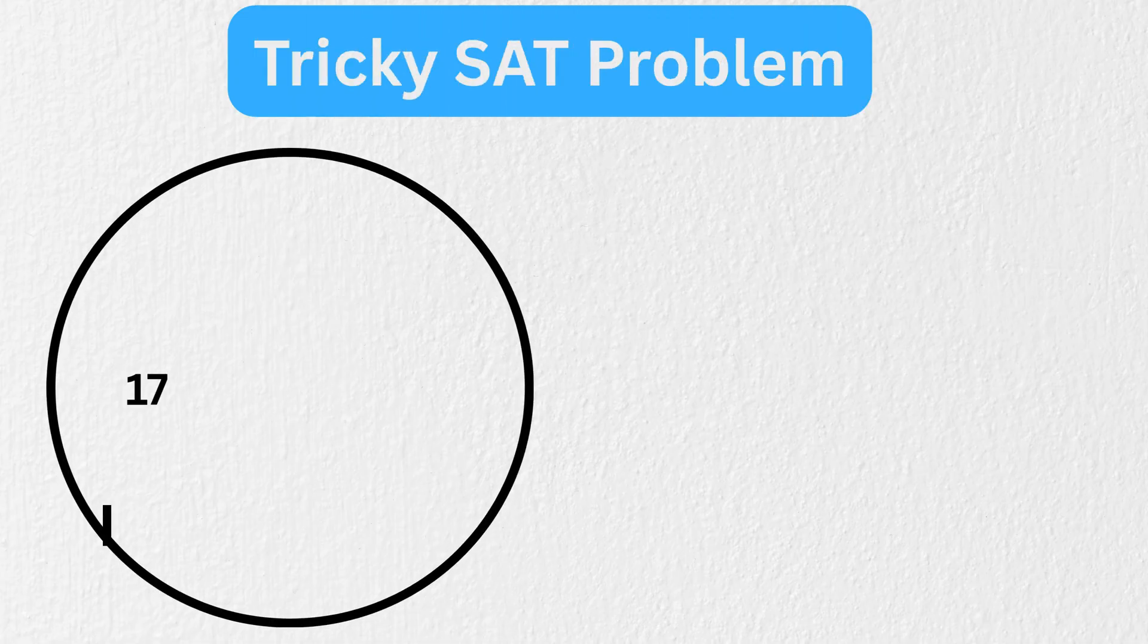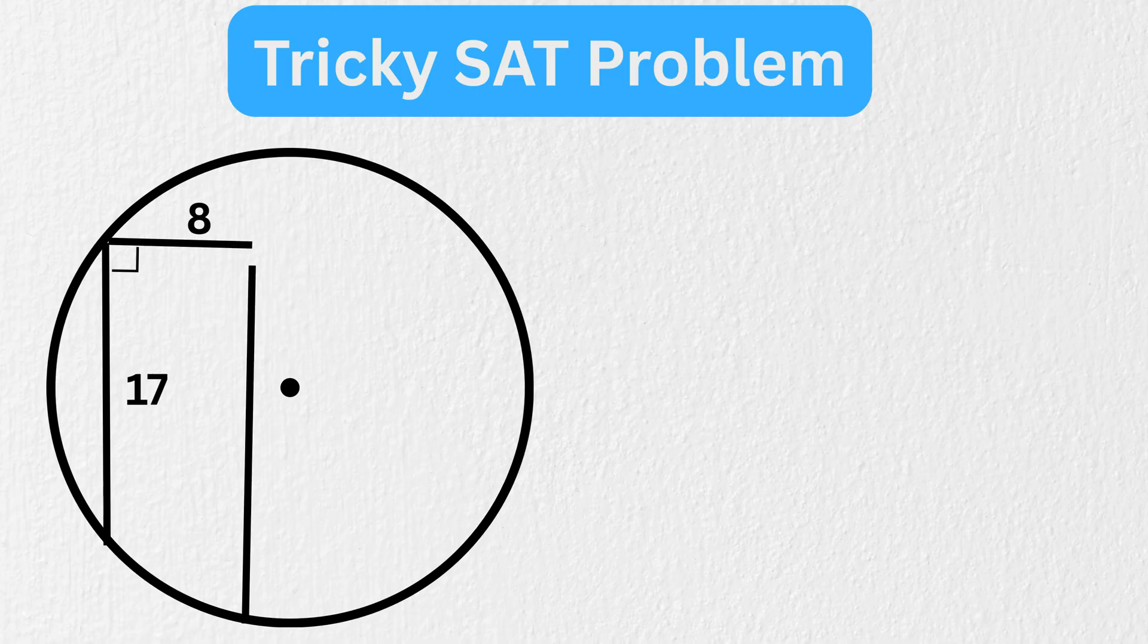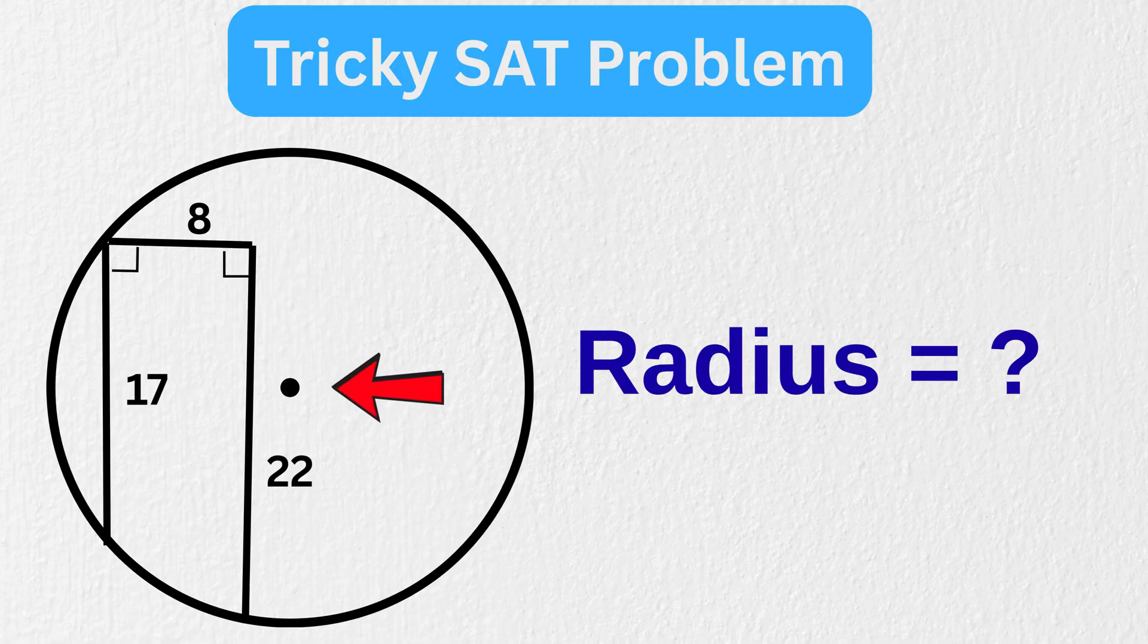We have a circle. Now draw this chord. Its length is 17 units. Then draw this line, which is also perpendicular to this chord, and its length is 8 units. Then draw another line, which is perpendicular to this line. Its length is 22 units. Our job is to find the radius of this circle.